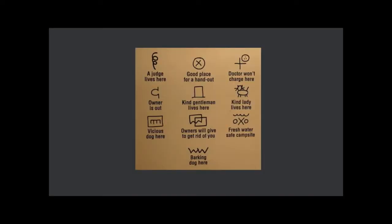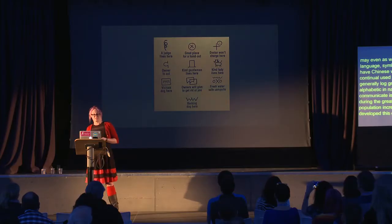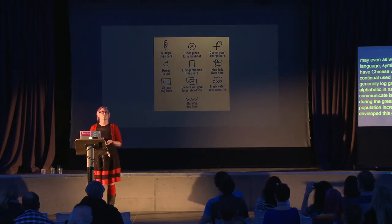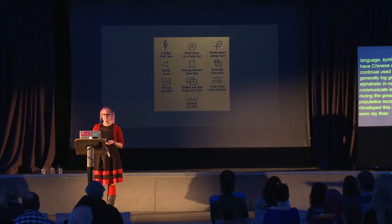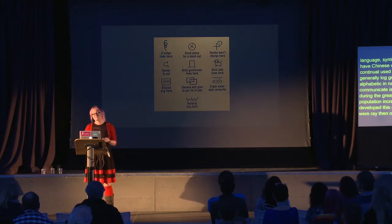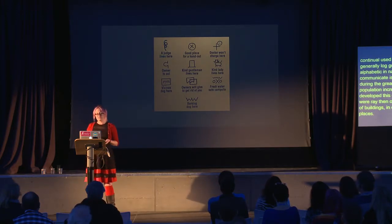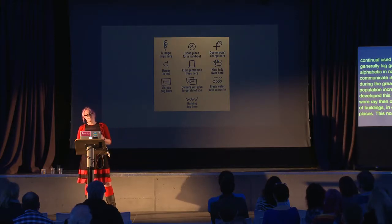During the Great Depression in America, the homeless population increased exponentially, and they developed something called the Hobo Code. These were temporary messages written in charcoal on utility poles, on rocks, on the sides of buildings, in order to indicate safe or unsafe places. This nonverbal communication made a vulnerable experience safer.